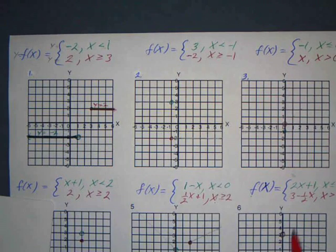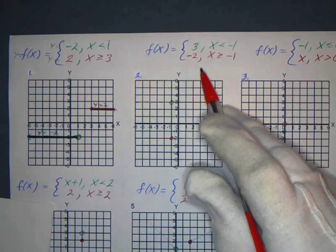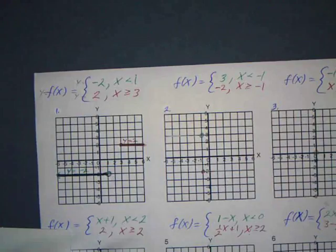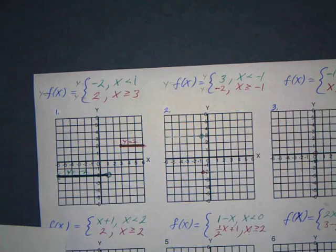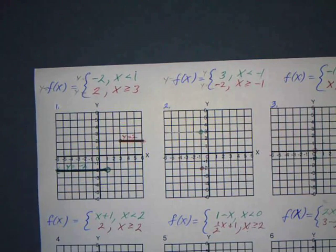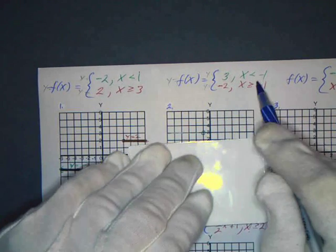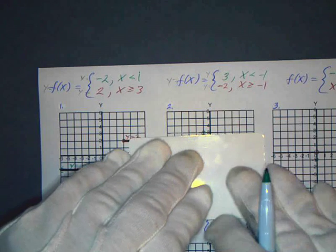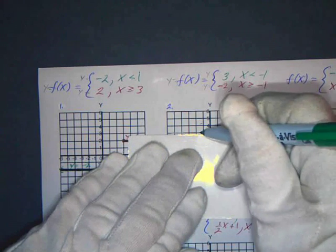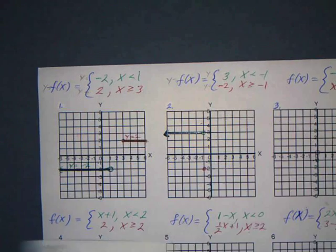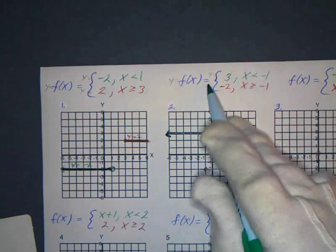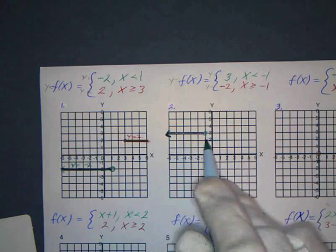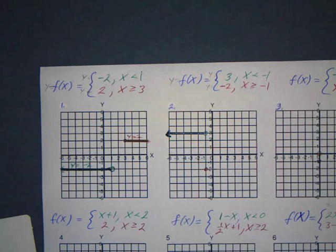Let's take a look at number two. So y equals three — f(x) is the same thing as y — and this is just two different parts: y equals three or y equals negative two, depending on where you are. So the horizontal line will be at y equals three when x is less than negative one. Since it's not equal to, we'll have a little open circle there. That's why we've got the circle — all the points where y is three, as long as x is less than negative one.